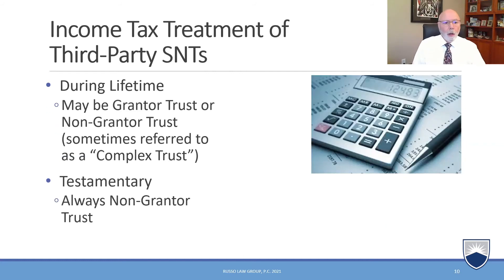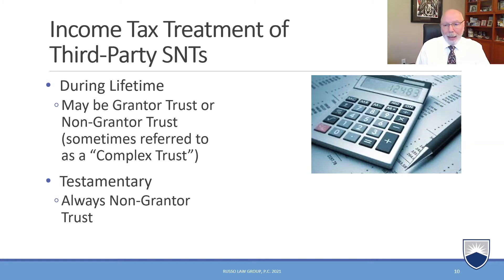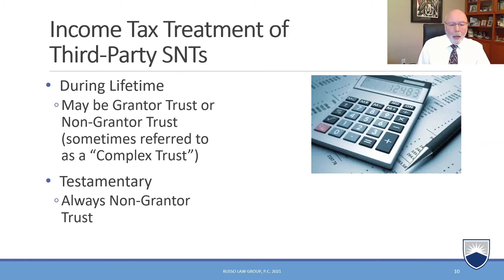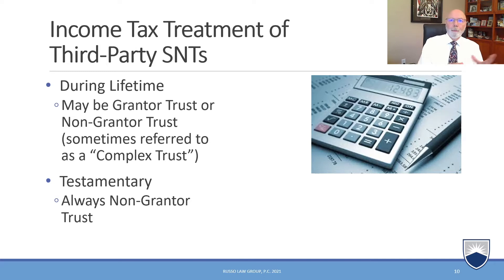Let's move on to income taxation of the third-party special needs trust during lifetime. The trust can be set up as a grantor trust, which would push all the income back to the person who set it up, or as a non-grantor trust. When one accountant speaks to another, they may refer to a non-grantor trust as a complex trust. If it was a trust set up under a will or existing trust upon the demise of the grantor, that is always a non-grantor trust. A grantor trust pushes all the income back to the grantor; a non-grantor trust opens the door that the trust may pay the tax, or the beneficiary, or in some pro-rata way.